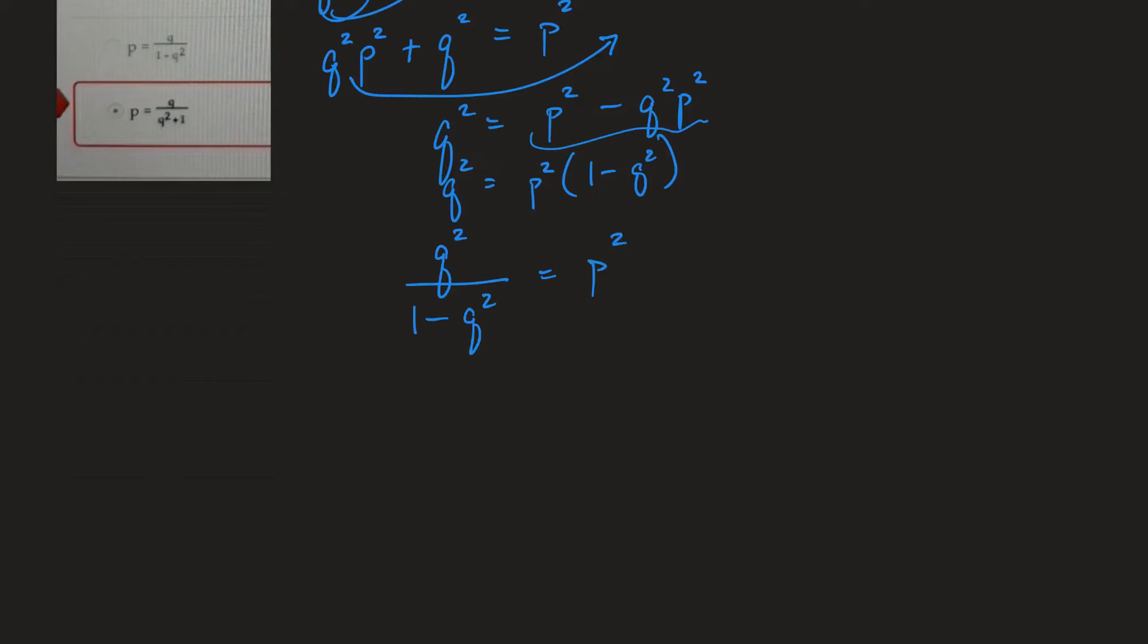Almost there. And now I can square root both sides. Square root this, square root this. So on the right side, I'm just left with a p, which is what I'm looking for. And on the left side, I'd have the square root of q squared over the square root of 1 minus q squared. And so p is equal to the square root of q squared is just q over the square root of 1 minus q squared.